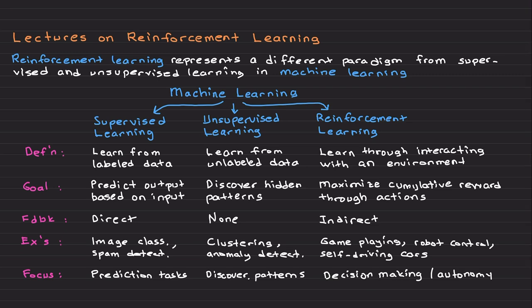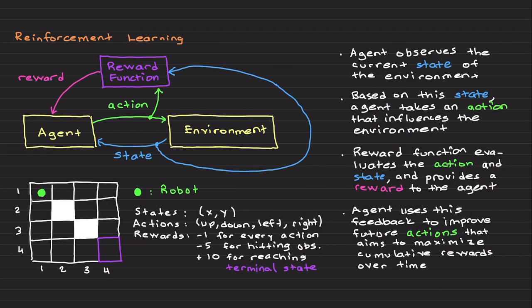If you would like to learn machine learning for decision making and autonomy, you are on the correct lecture series on reinforcement learning. Looking at this figure, there is an agent, an environment, and a reward function block. The agent observes the current state of the environment, and based on this state it takes an action.